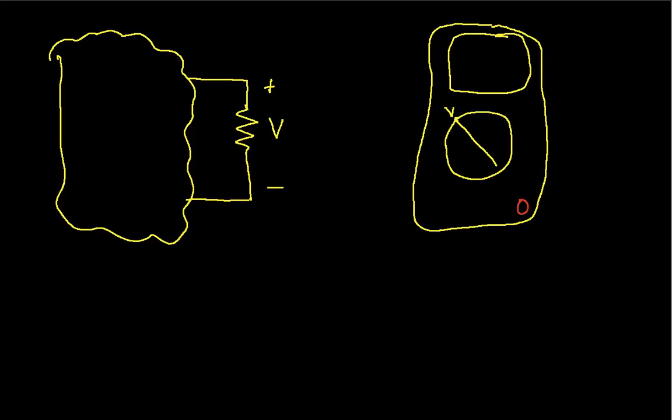We take one lead and connect it over here. We take the negative lead and we connect it over here. And our goal is to figure out what the voltage is that we would have across this resistor.